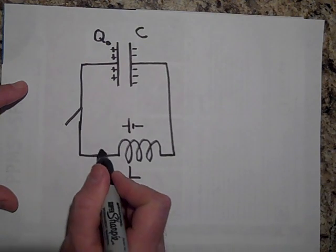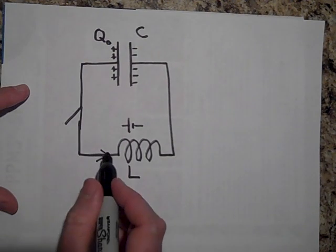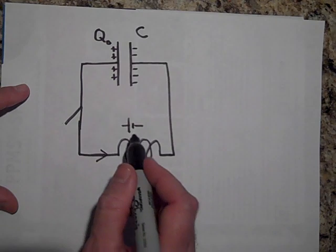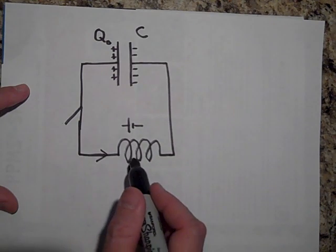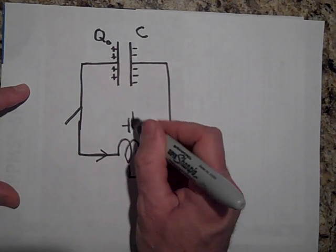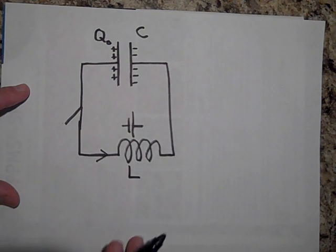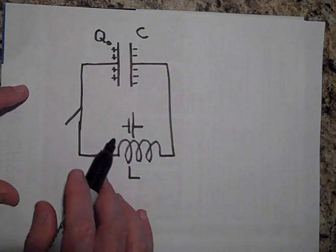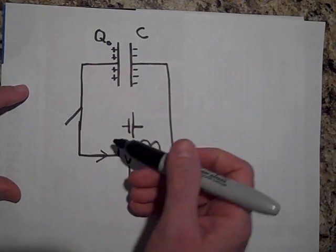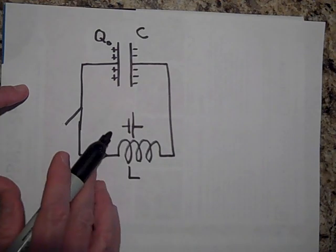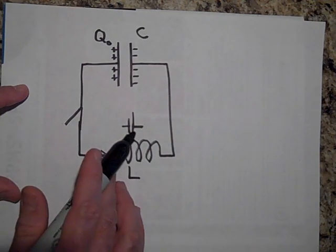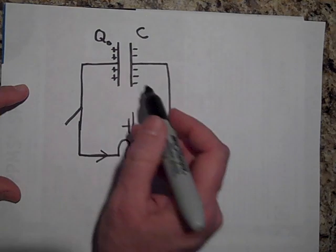But as soon as it starts to die out, as soon as this current that is going this way starts to die out, now this is going to try and stop the current from changing by pushing it that way. So not only does this resist the current this way, but when it goes to die out, it resists that current dying out.